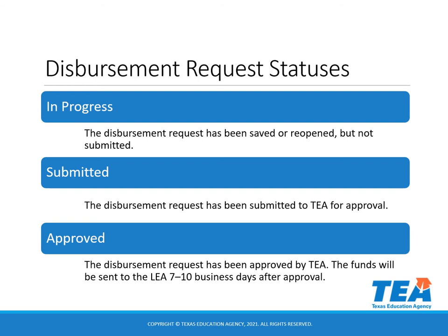In progress: the disbursement request has been saved or reopened but not submitted. Submitted: the disbursement request has been submitted to TEA for approval. Approved: the disbursement request has been approved by TEA. The funds will be sent electronically to the LEA within seven to ten business days after approval.